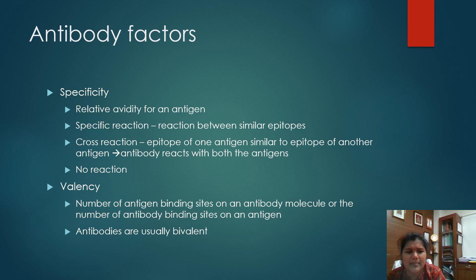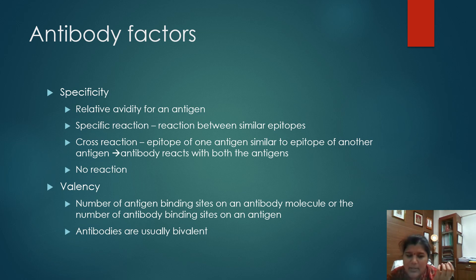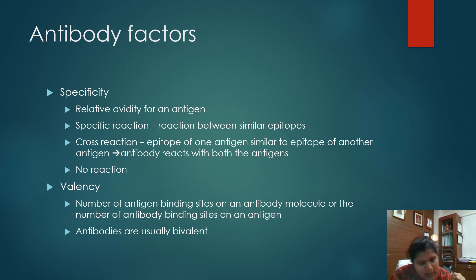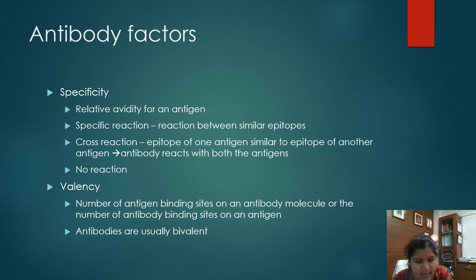Next is specificity — the relative avidity. When similar epitopes are present, they give a specific reaction. But when an epitope of one antigen is similar to an epitope of another antigen, the antibody against epitope A can also react with the other antigen's epitope — this is called a cross-reaction. The antigens are different but their epitopes are similar enough that the antibody reacts with both. The feature of specificity can result in: a specific reaction, a cross-reaction, or no reaction. Valency is the number of antigen binding sites on an antibody molecule. A Y-shaped antibody molecule has two binding sites; if it exists as a dimer, there will be four. In case of IgM, being a pentamer, they are supposed to have 10 sites.